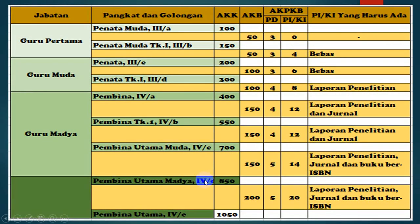Yang terakhir, dari 4D ke 4E dibutuhkan 200 AK. Dari 200 ini harus 5 PD dan 20 PIKI. Dari 20 PIKI, syaratnya sama persis dengan 4D yaitu harus ada laporan penelitian, ada jurnal, dan buku ber-ISBN. Jika salah satu dari tiga syarat ini tidak terpenuhi, maka tidak bisa naik ke golongan 4E. Perlu ditegaskan bahwa laporan penelitian ini tidak harus PTK; boleh penelitian eksperimen, pengembangan, korelasi, atau penelitian jenis lainnya.